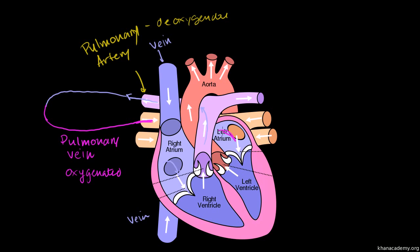The oxygenated blood from the pulmonary vein flows into the left atrium — from our point of view it's on the right-hand side, but from the person facing us it's his left. After the left ventricle is done pumping and expands, oxygenated blood flows in from the left atrium. Then the left ventricle squeezes and pumps the blood into the aorta. The aorta is an artery because we're going away from the heart — but it's not a pulmonary artery, since we're no longer dealing with the lungs.